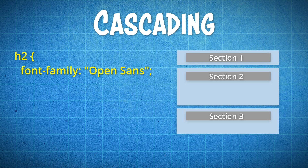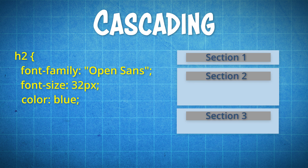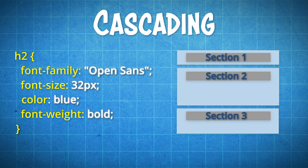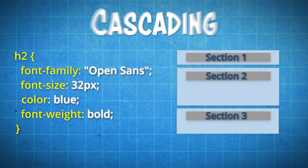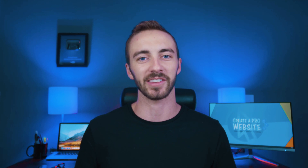You can even assign multiple values, such as font size, color, weight, and more. For the record, this is called a property, and this is called a value. And it's not just for text — any visual element on your website, such as backgrounds, boxes, headers, footers, images, literally anything can be altered with CSS.